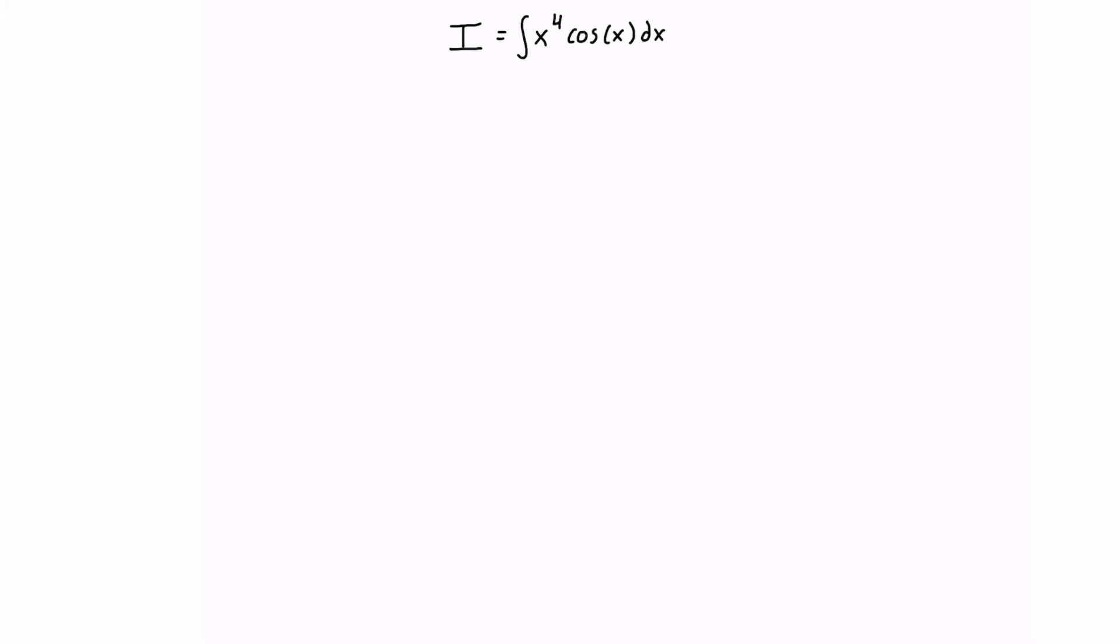If you have an integral and you determine that you can split it into two different parts where one part would have successive derivations that tend to zero and the other part is easy to integrate, then you can apply integration by parts the fast way and solve it super fast.